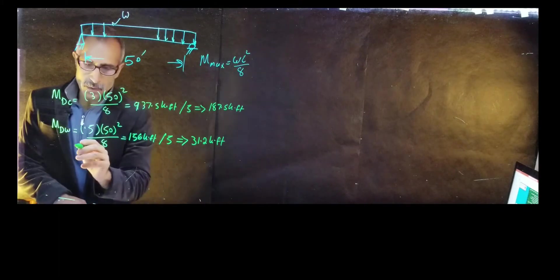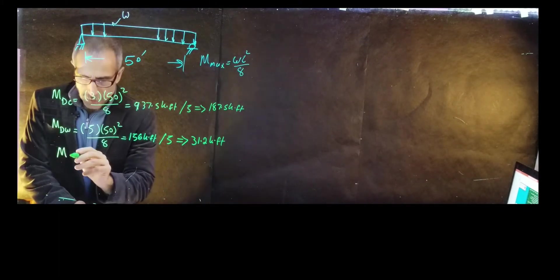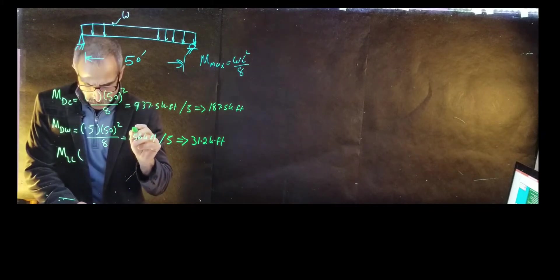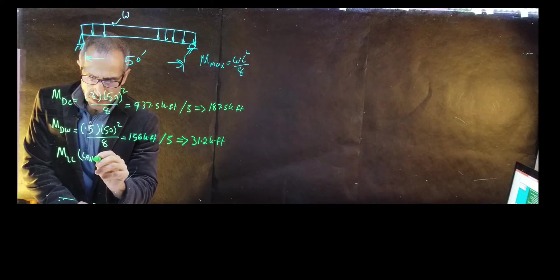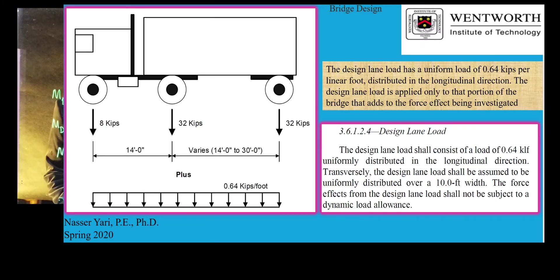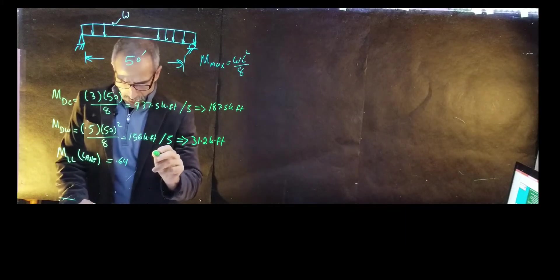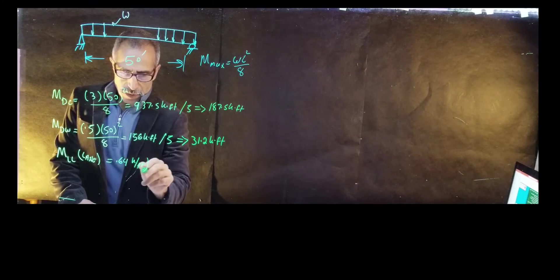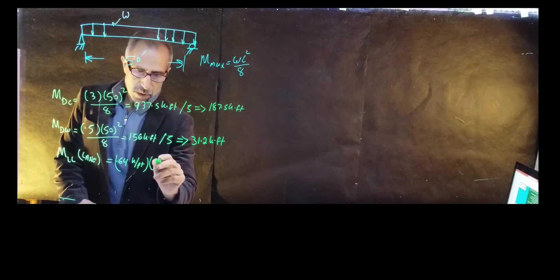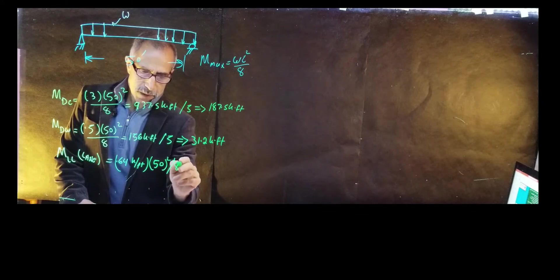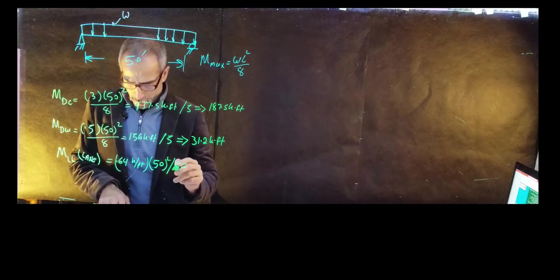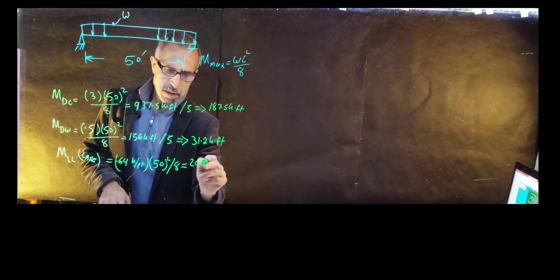Now for the live load. M_LL for the lane load: per AASHTO, the unit load is 0.64 kip per foot. So that's 0.64 times 50 squared divided by eight, which gives us 200 kip-foot.